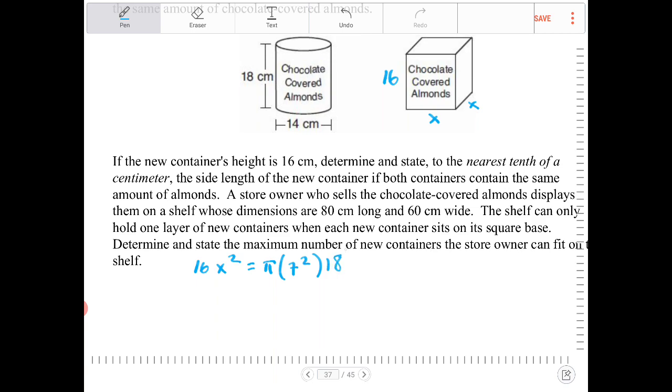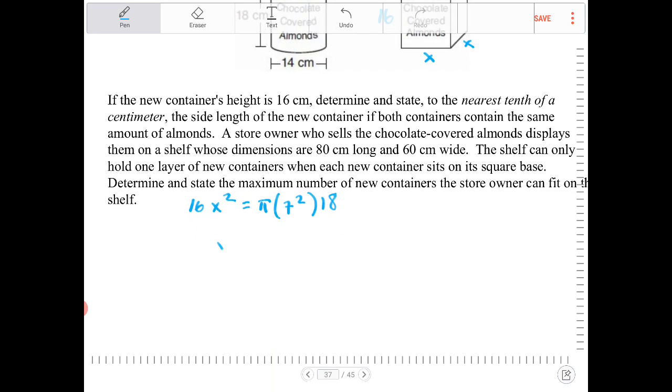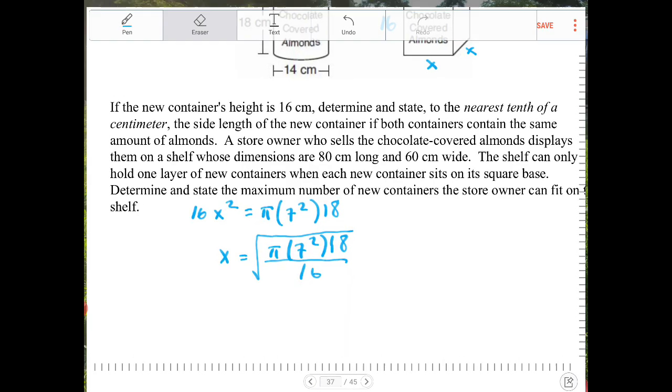And what we've got to do is figure out what is the length of x. So we divide both sides by 16, and then we take the square root of that. We can actually just enter that all into the calculator in one step. So let's go to our calculator.